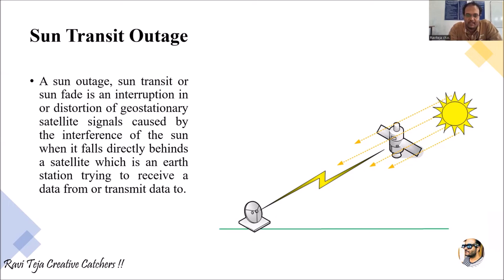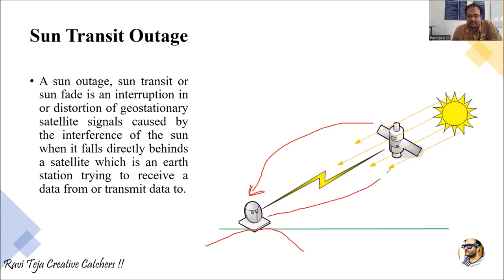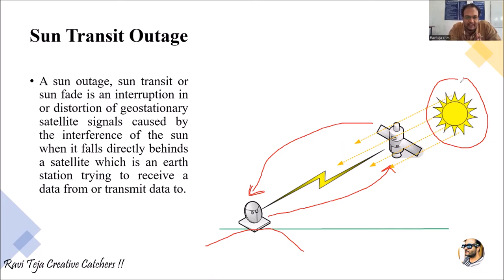Sun transit outage: a satellite is transmitting a signal to a dish or an earth station present on the earth. The satellite keeps on transmitting the signal to the earth station, and the earth station keeps on transmitting signals to the satellite. Now, a sun outage, sun transit, or sun fade is an interruption or distortion in geostationary satellite signals caused by interference from the sun when it falls directly behind a satellite that an earth station is trying to receive from or transmit to.